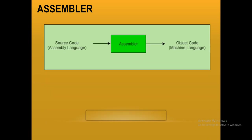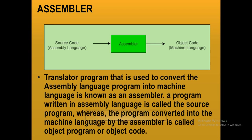An assembler is a software which converts assembly language into machine language — that is, it converts source code into object code. A program written in assembly language is called the source program, whereas the program converted into machine language by the assembler is called the object program or object code.